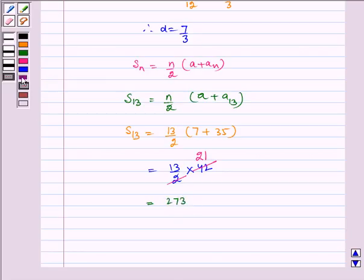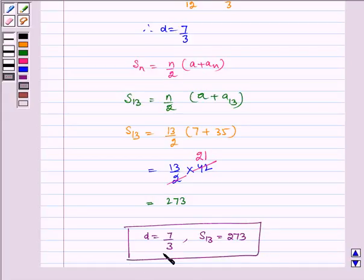Therefore, D is equal to 7 by 3 and S13 is equal to 273 is our required answer. I hope you understood the question. Bye and have a nice day.